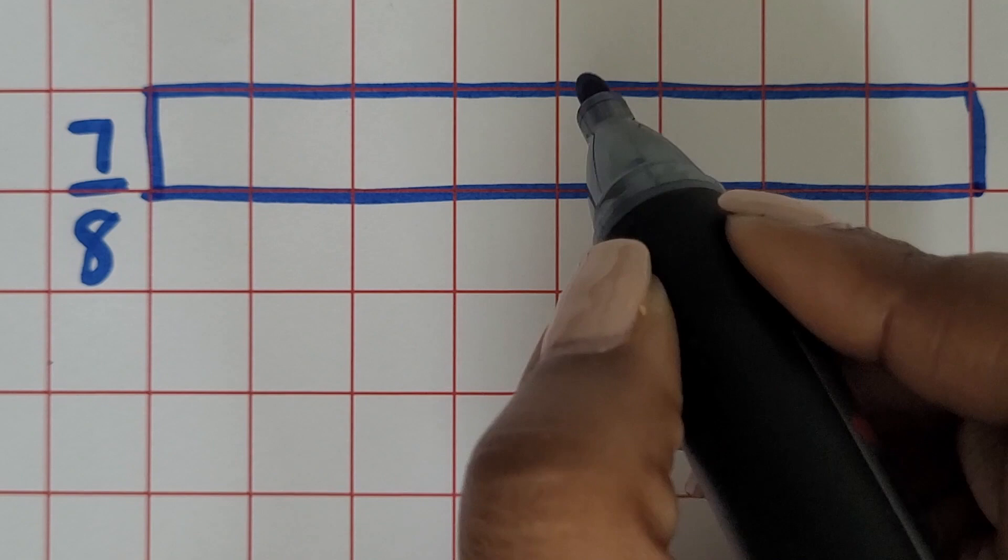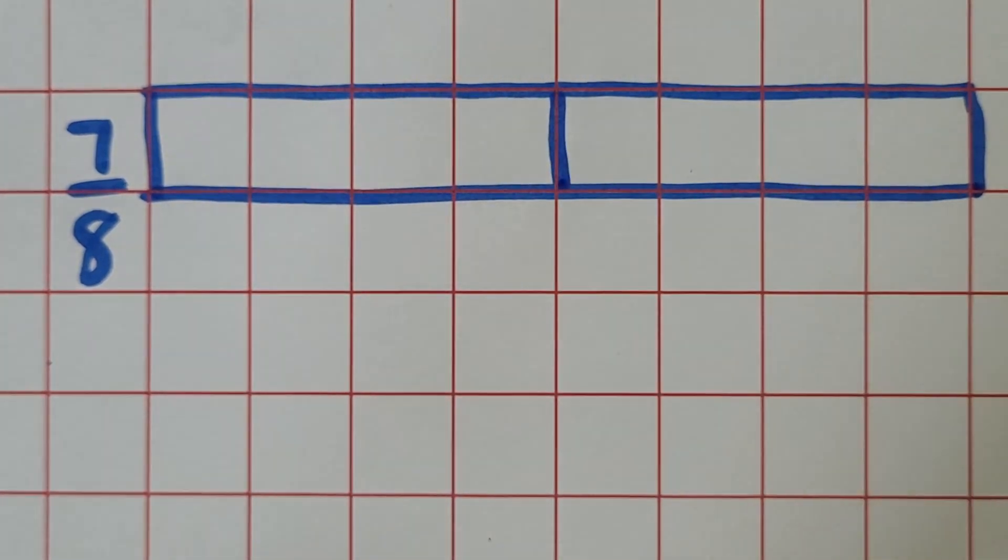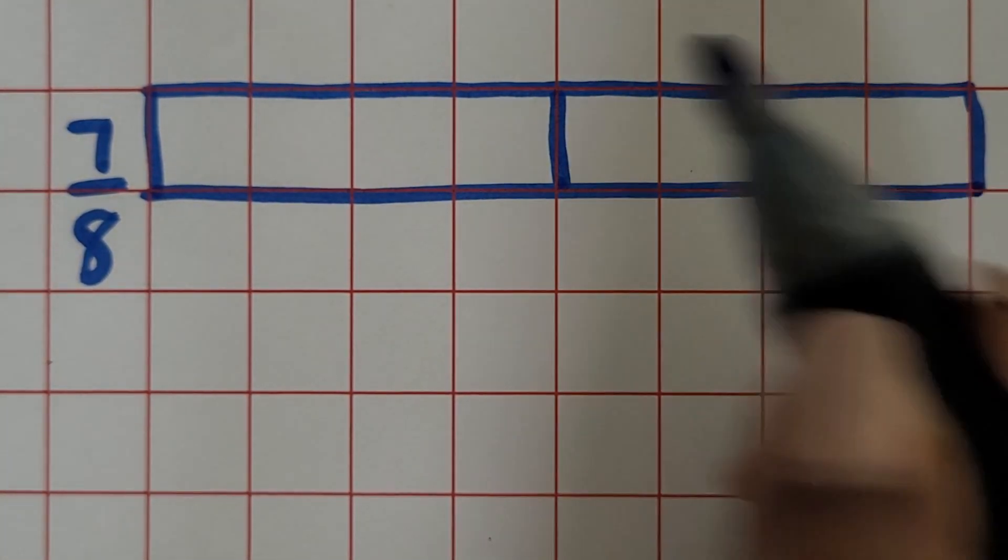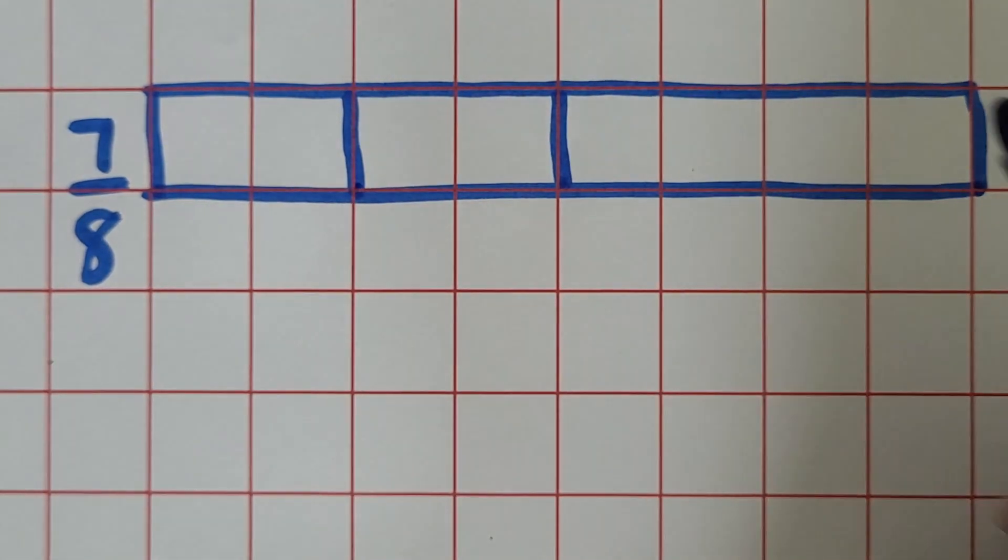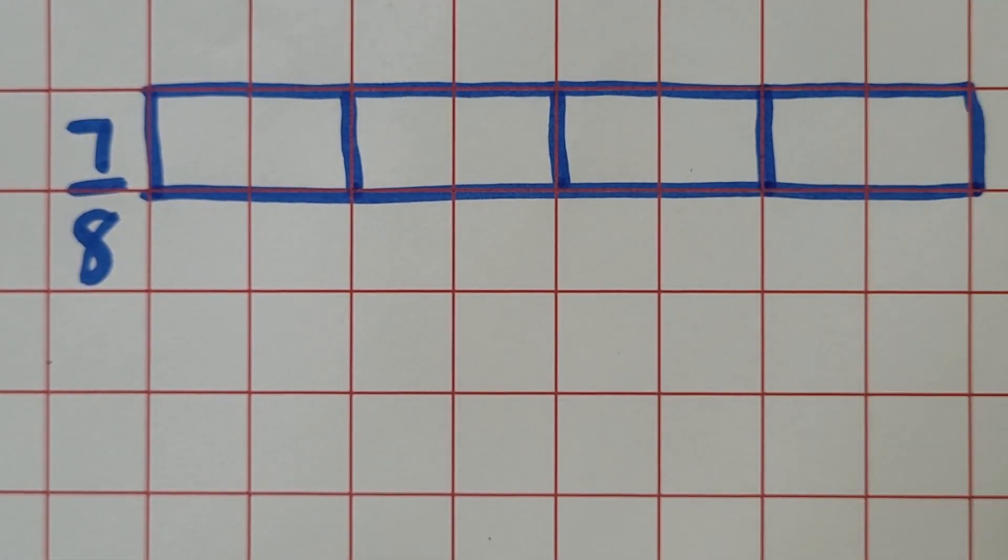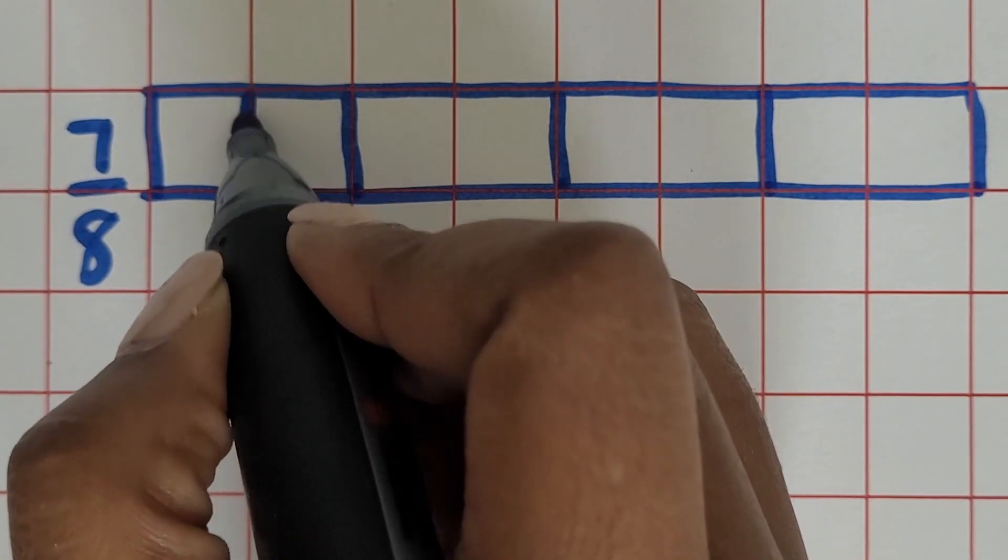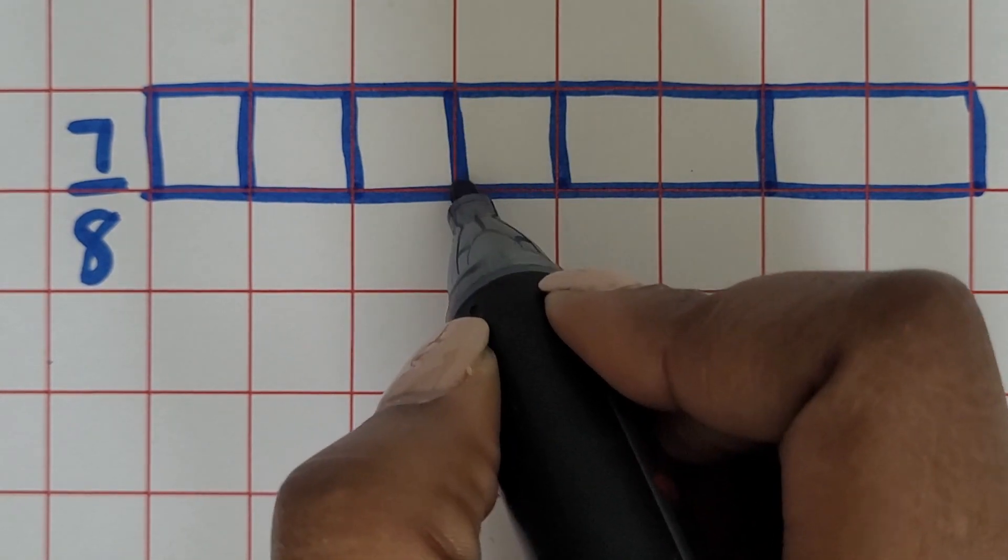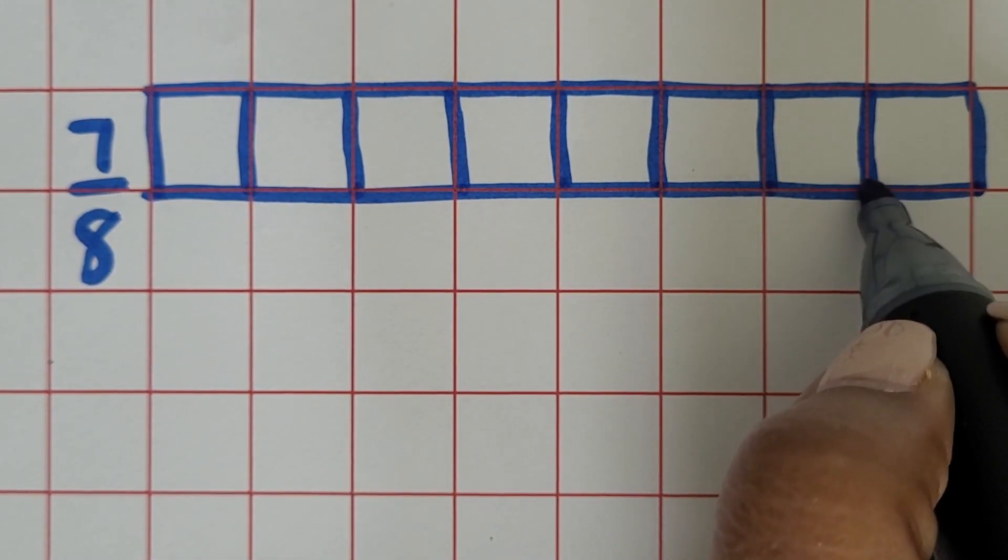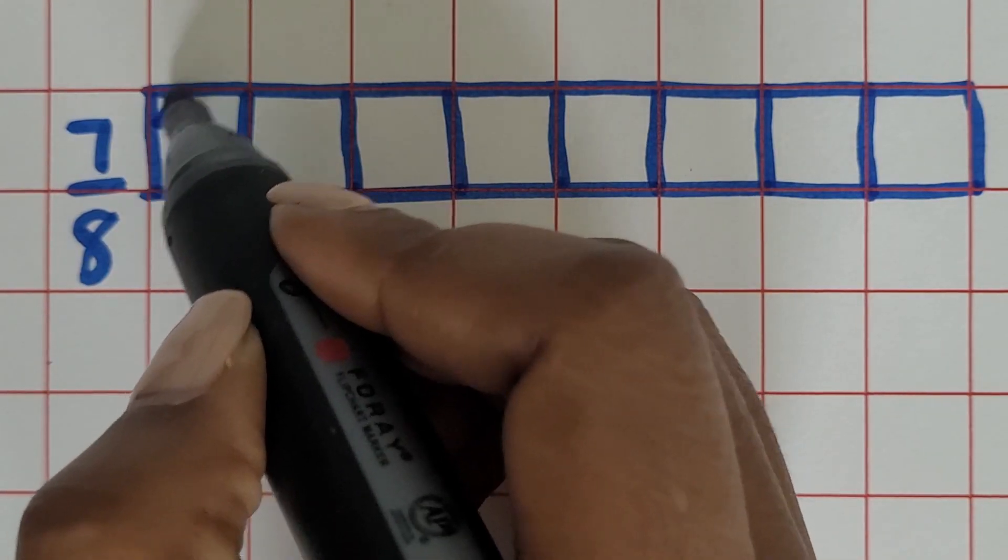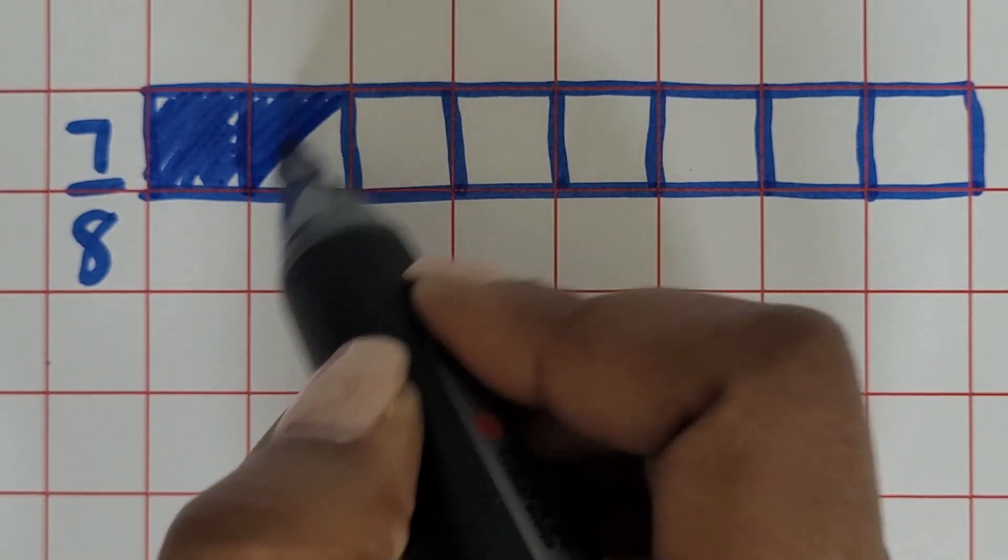We're going to start following the lines on the grid to represent eighths. Count out eight lines to make our rectangle and partition them into eight equal pieces. Our numerator is seven, so we're going to shade in seven of the eight parts.